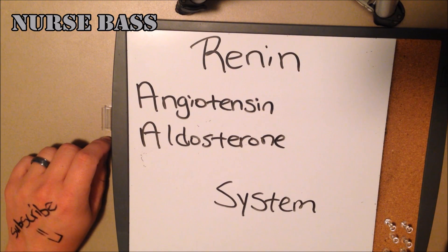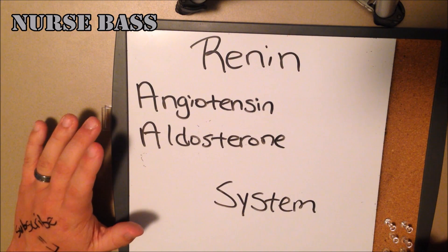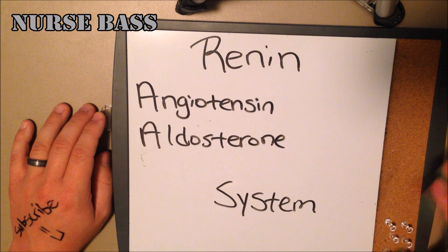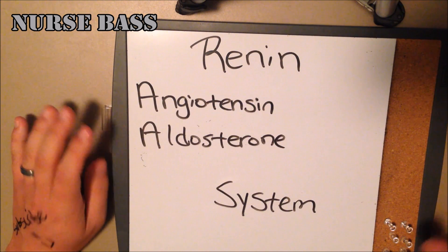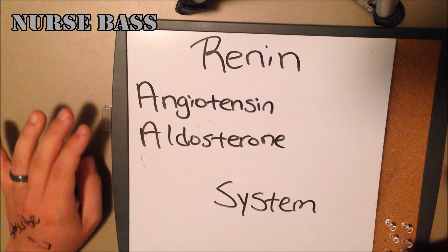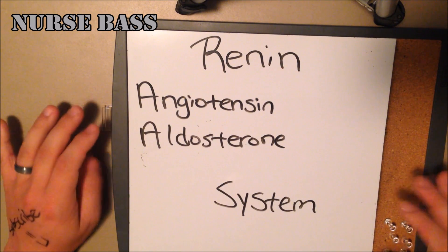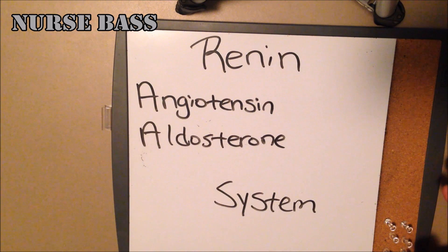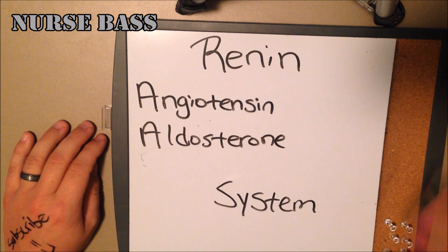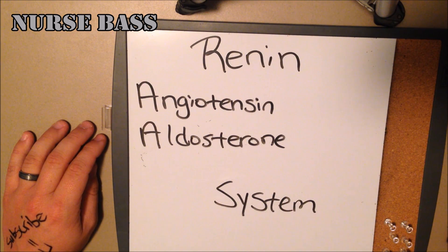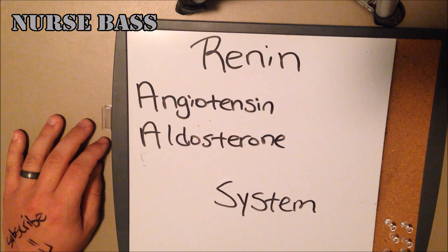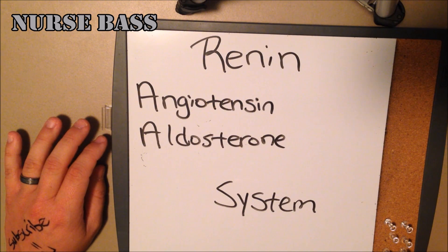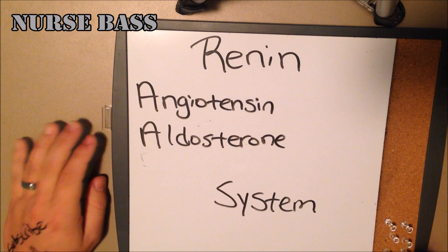What's going on guys, it's your boy Brad and I'm back with another video. In this video I want to talk about the renin angiotensin aldosterone system. This is a pretty important system to become familiar with. This is going to be another installment in my made easy series, trying to give you guys videos to help you succeed in nursing school, but this really applies to many other fields as well.